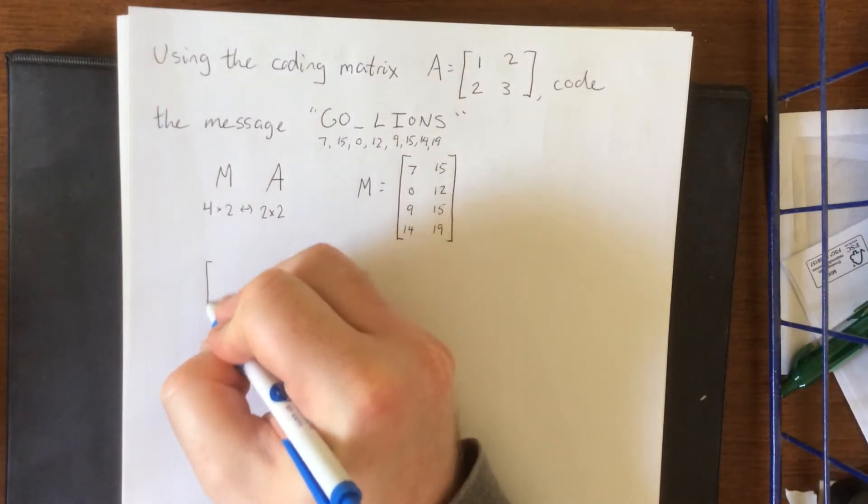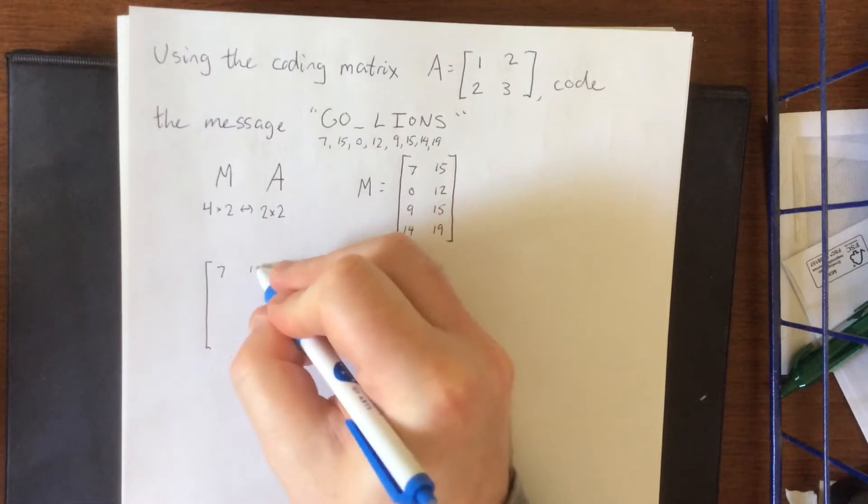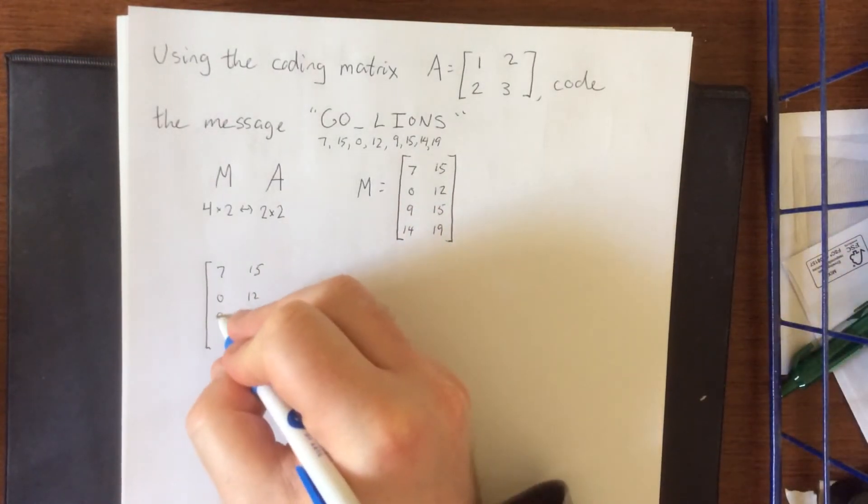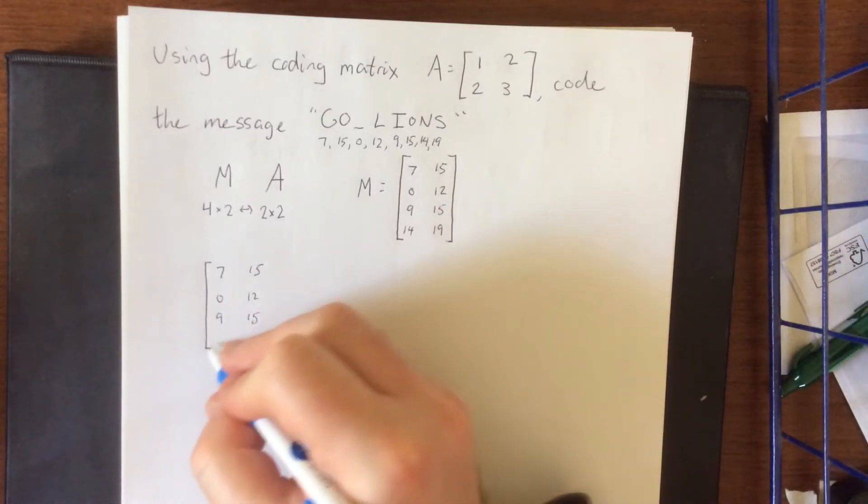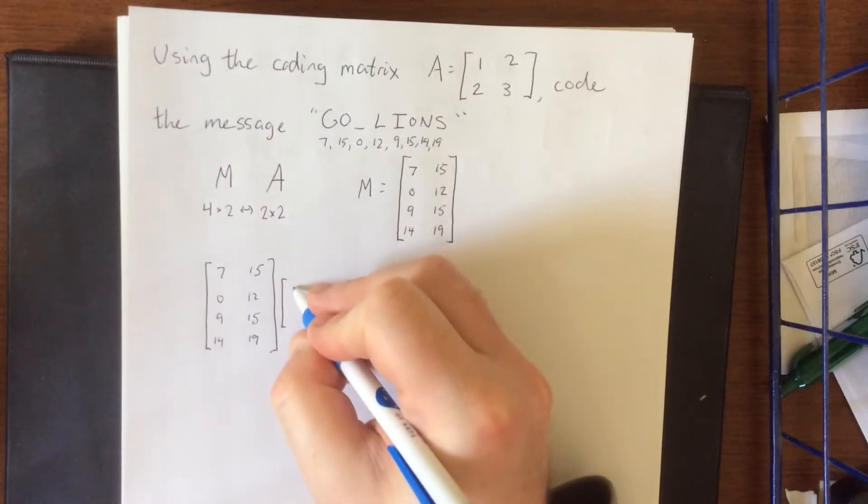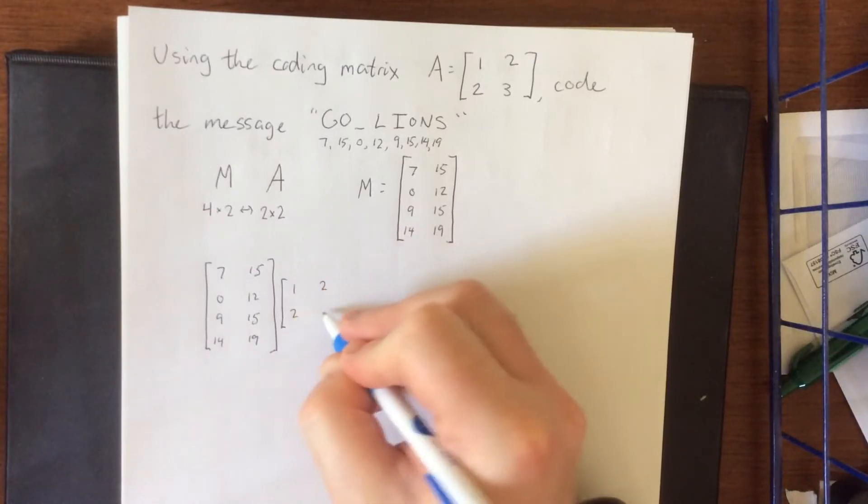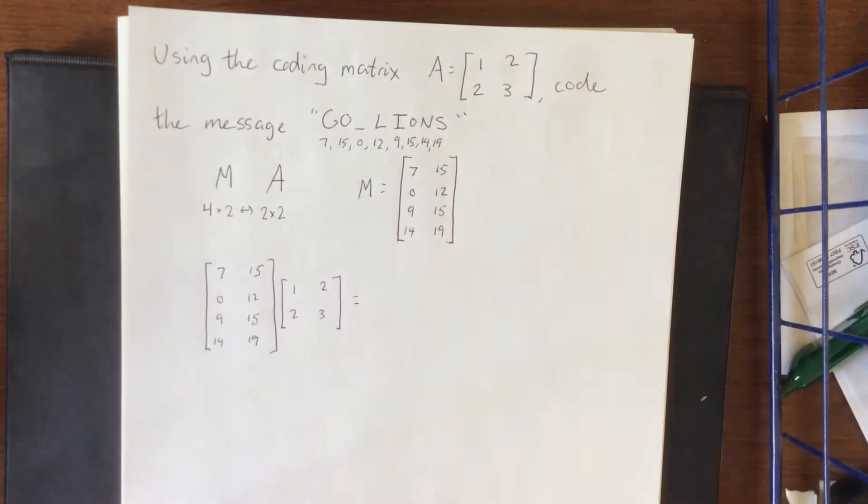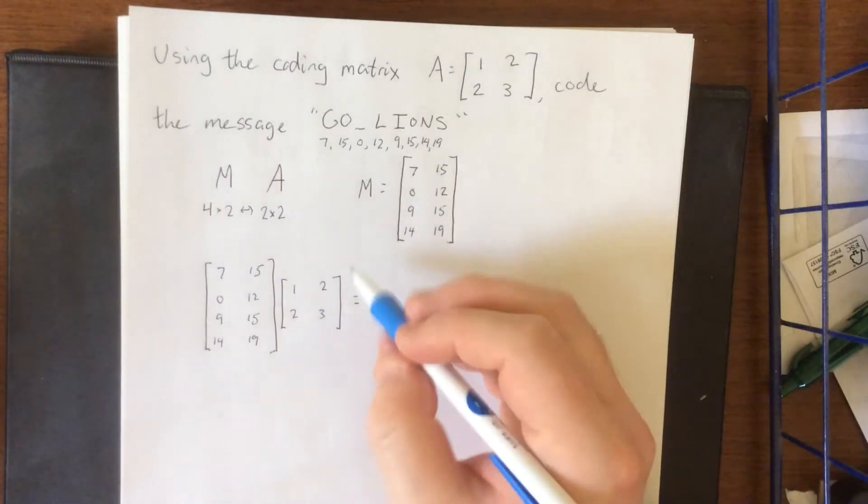Then we are going to multiply our message matrix 7, 15, 0, 12, 9, 15, 14, 19 by our coding matrix 1, 2, 2, 3. Now with those things in mind this can either be done by hand or it can be done through the use of the graphing calculator. Because I'm feeling particularly good this morning let's go by hand.